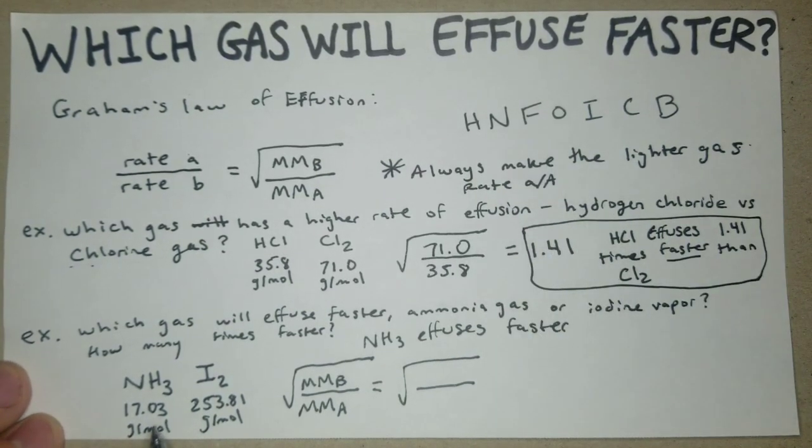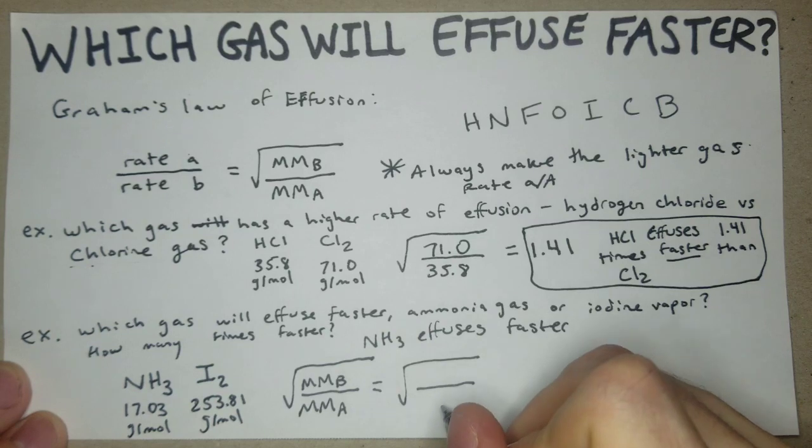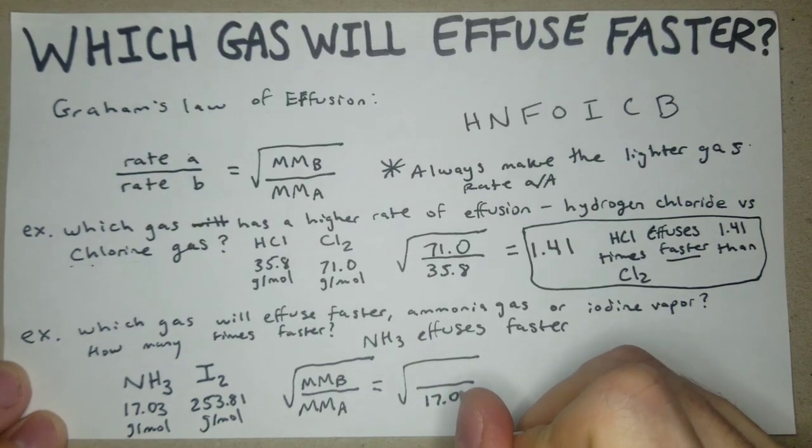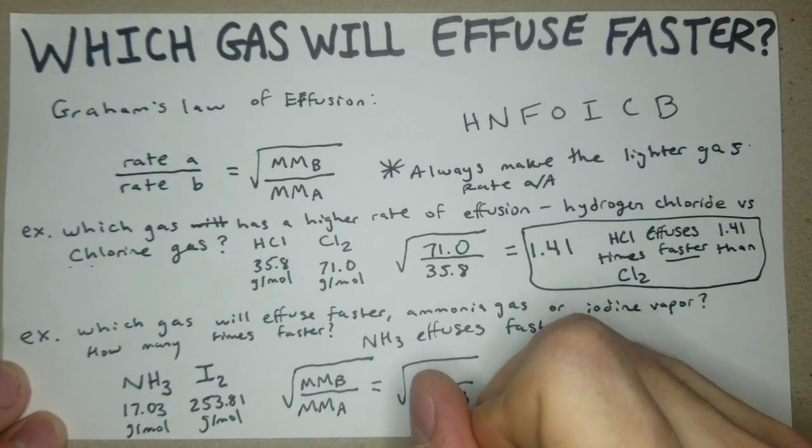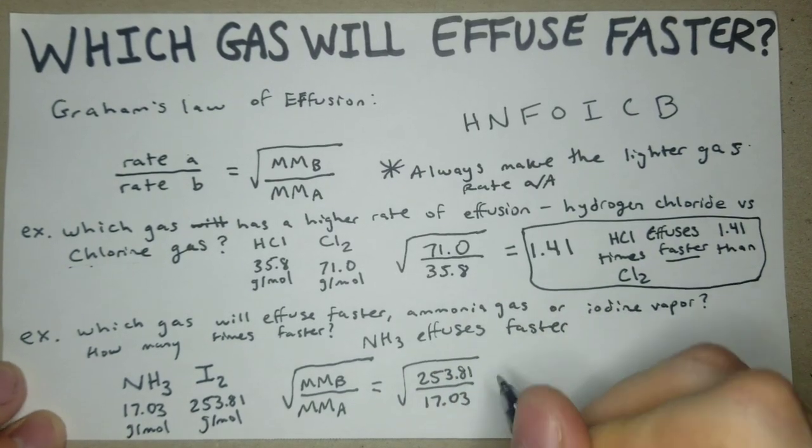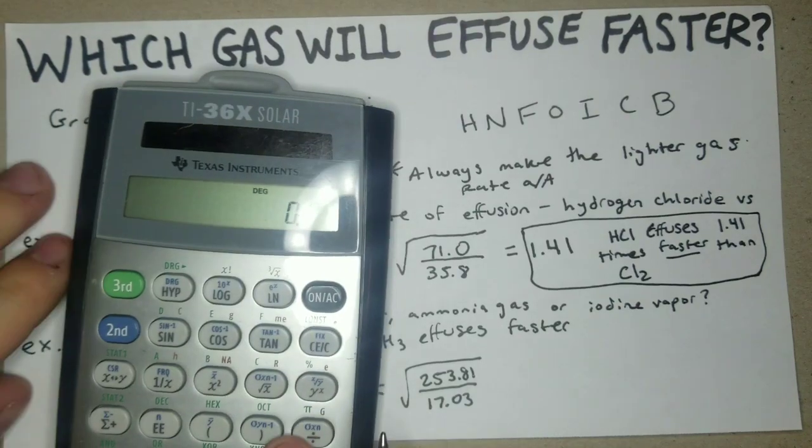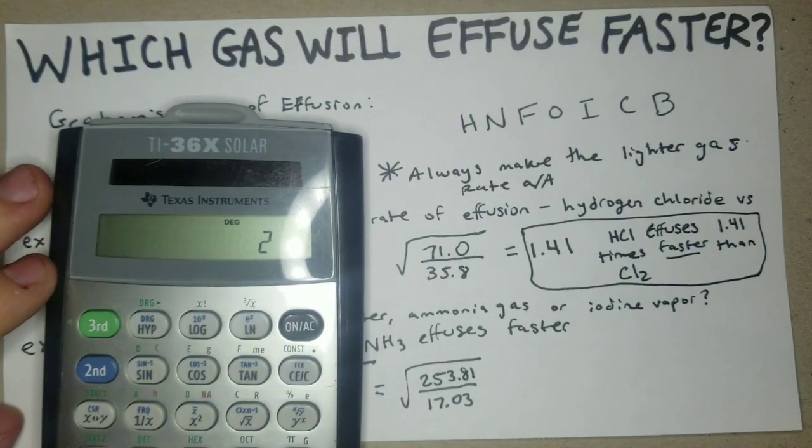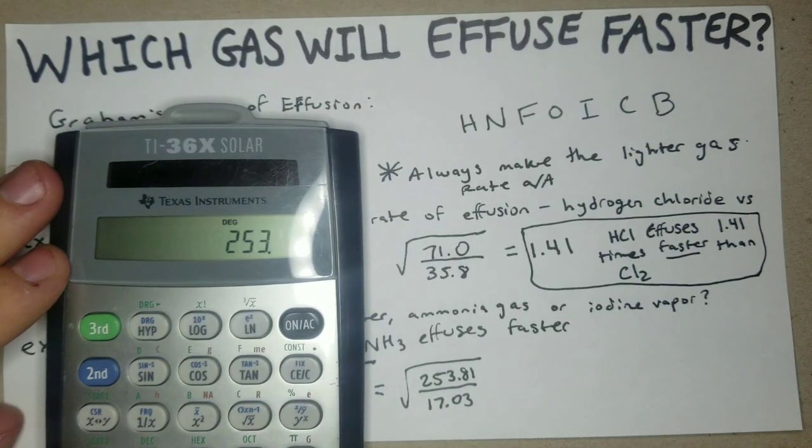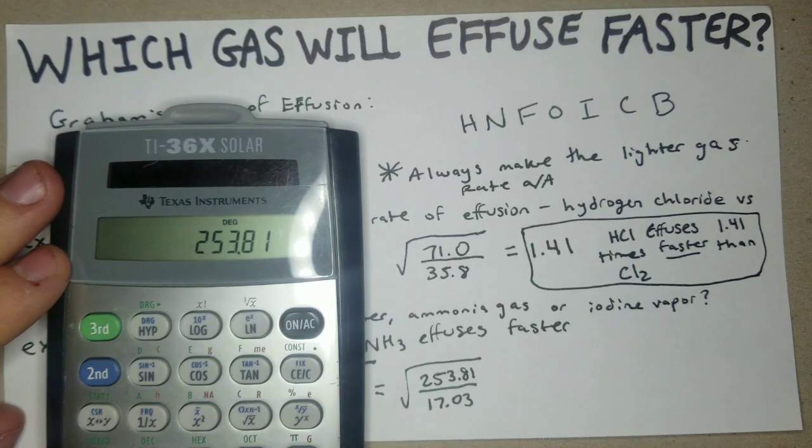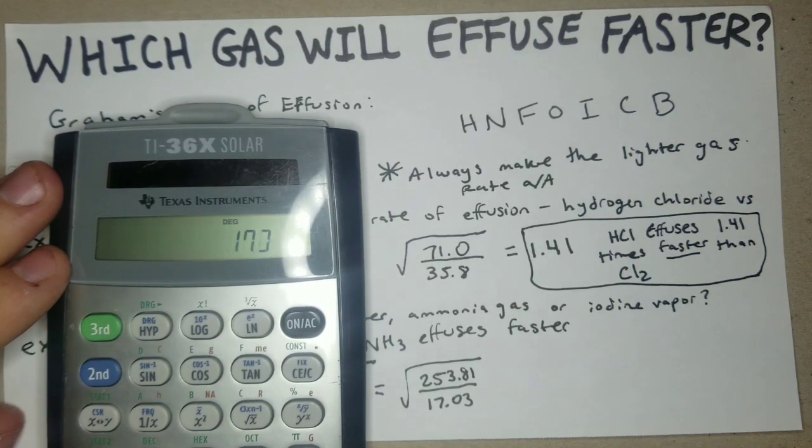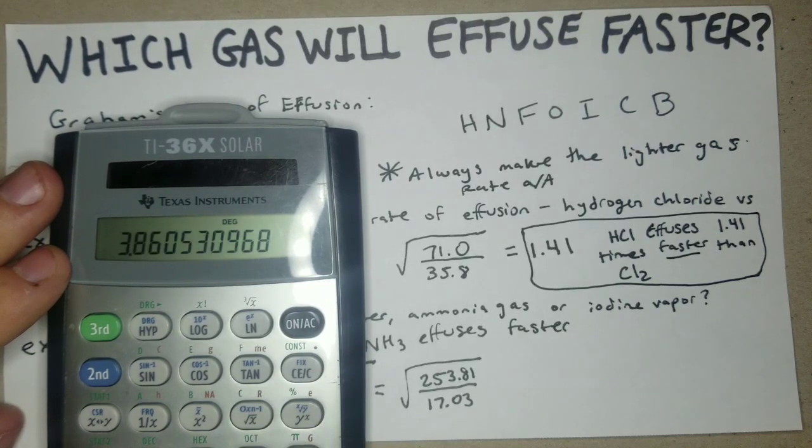In this case ammonia gas or NH3 is going to be rate a. So that's going to be on the bottom, we have 17.03, and then on top we have 253.81. So now let's just do that math, plug that in. 253.81 divided by 17.03, and then we square root that.